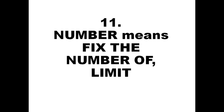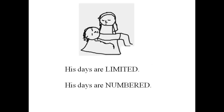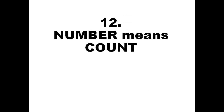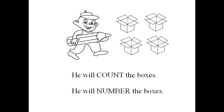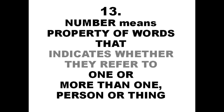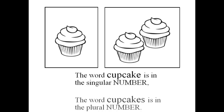Number means fix the number of, limit. His days are limited — his days are numbered. Number means count: he will count the boxes — he will number the boxes. Number means the property of words that indicates whether they refer to one or more than one person or thing. The word cupcake is in the singular number; the word cupcakes is in the plural number.